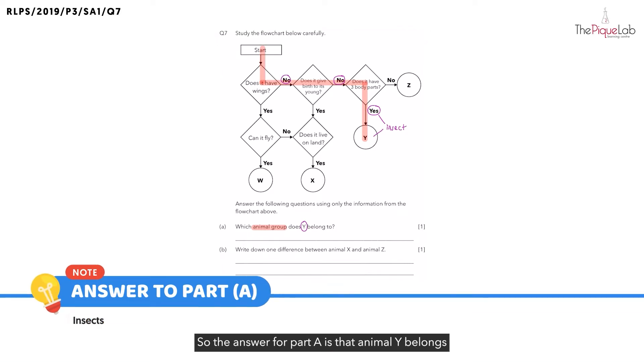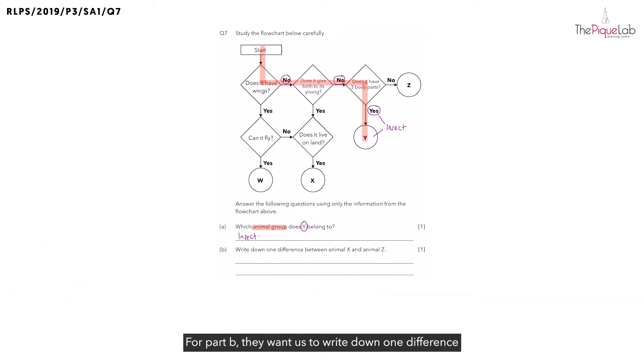For part B, they want us to write down one difference between animals X and Z. Similar to part A, the first thing I want you to do is to take out a different colored pen and I want you to start tracing out from X all the way to the starting point of the flowchart.